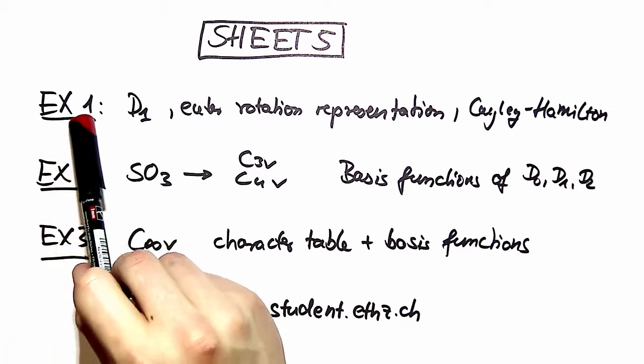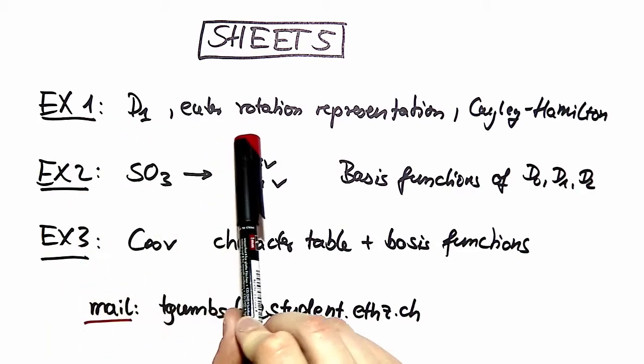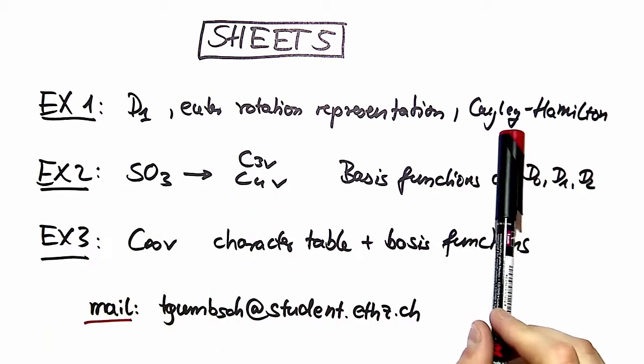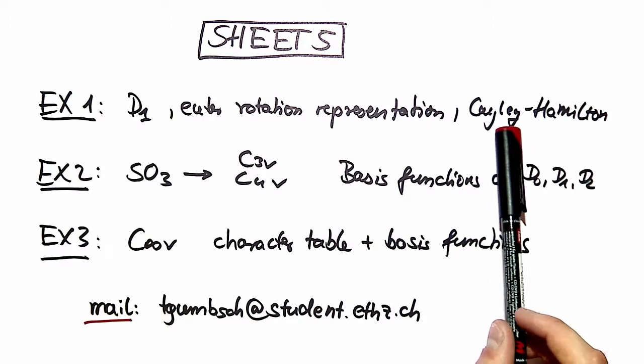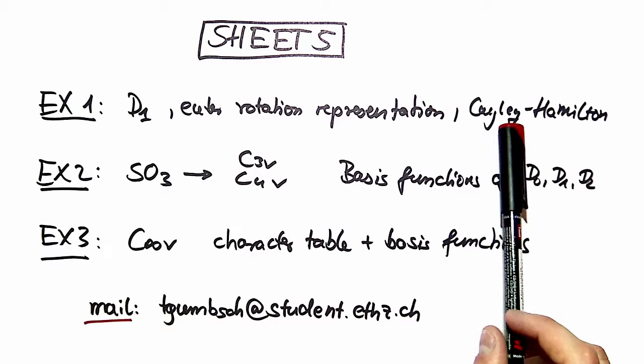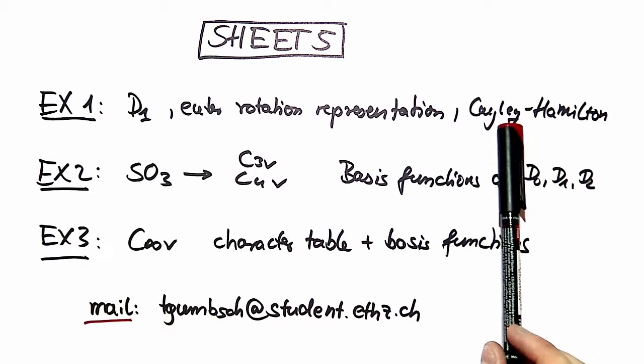Here is how it's structured. In exercise number one, we look at the Euler rotation representation and the use of the Cayley-Hamilton theorem, which makes it easier to deduce a structure in the Taylor series expansion we already encountered in exercise sheet number four.